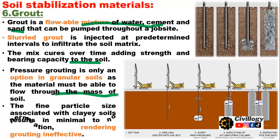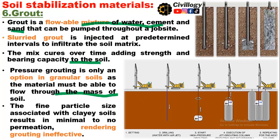The fine particle size associated with clay soils results in minimal to no penetration, rendering grouting ineffective — meaning clay soils are not good candidates for grouting. The grouting procedure involves setting up a machine to drill a hole in the unstabilized soil. Drilling takes place by torsion, producing a twisting effect into the soil. Then execution of jet grouting involves rotating and withdrawal as the drill moves upward, with grout pumped into the ground simultaneously. This is repeated for each column.